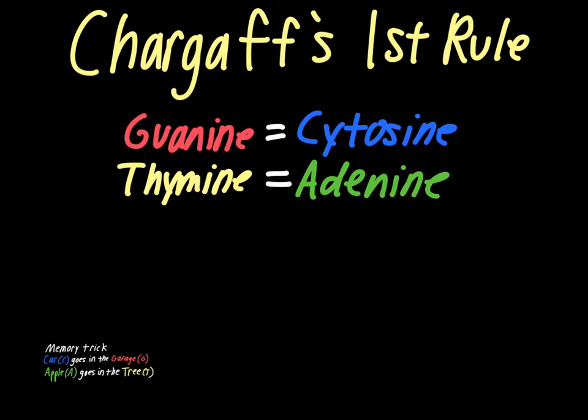What he eventually established was that thymine and adenine went together, and that guanine and cytosine went together. We'll talk about how these things actually bond together in a few minutes, and he was absolutely right. He didn't necessarily understand all of the biochemistry behind it, but he did know that this was a well-established pattern — that guanine and cytosine always went together, and thymine and adenine always went together, regardless of the species.